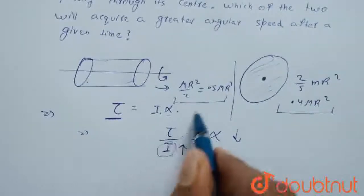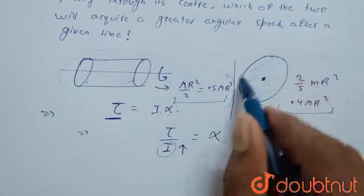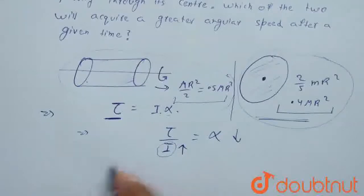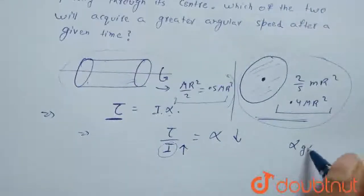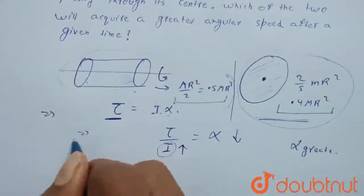Since the moment of inertia of the sphere is less, its α will be greater. And for the cylinder, its α will be less.